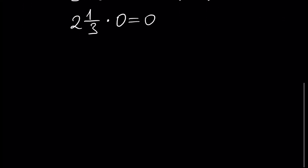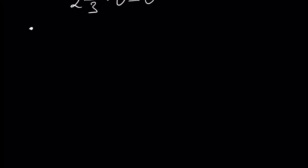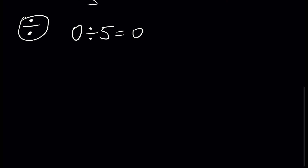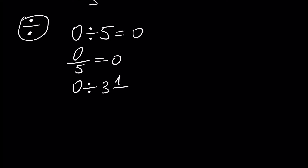Next, let's talk about division. The first case: the quotient of zero divided by any non-zero number is zero. For example, zero divided by five is zero, and zero divided by three and one-half — any mixed non-zero number — will also give zero.